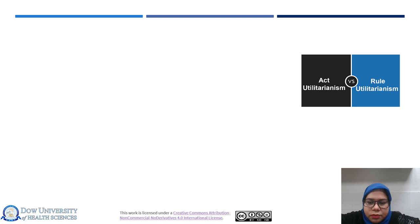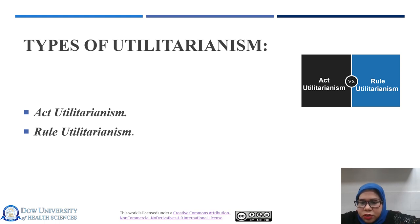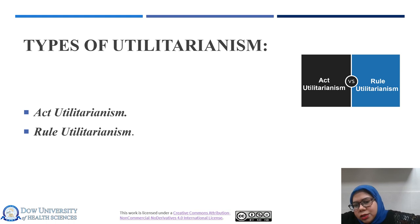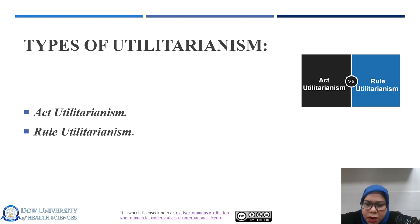There are two kinds of utilitarianism: act utilitarianism and rule utilitarianism. Act utilitarianism considers only the result or consequences of a single act, while rule utilitarianism considers the consequences that result from following a rule of conduct. In other words, act utilitarianism evaluates an act by its actual consequences, whereas rule utilitarianism evaluates an act by the consequences of its general or universal practice by all persons, perhaps extending into the future and past as well.